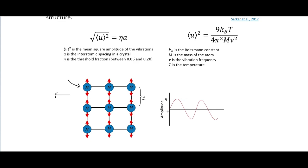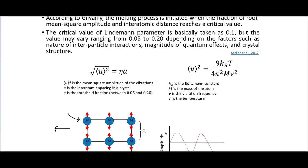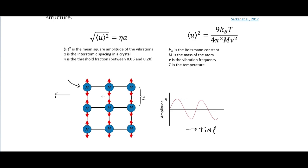We can think of the vibrations as a sinusoidal amplitude over time. We want to find the critical value — the Lindemann parameter η — which is typically about 0.1 (ranging 0.05 to 0.2). This tells you how much the atoms are vibrating. If the amplitude of vibrations goes beyond η, the vibrations are too large and the crystal lattice breaks down, causing melting.